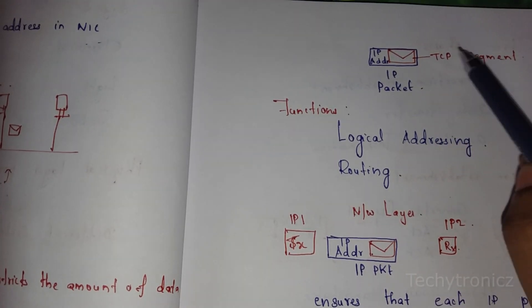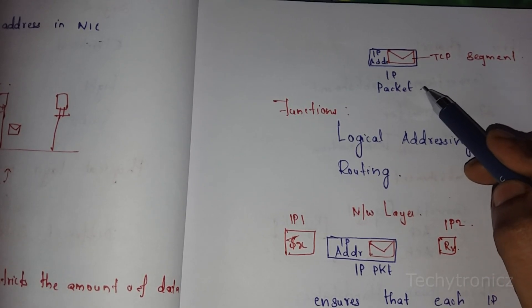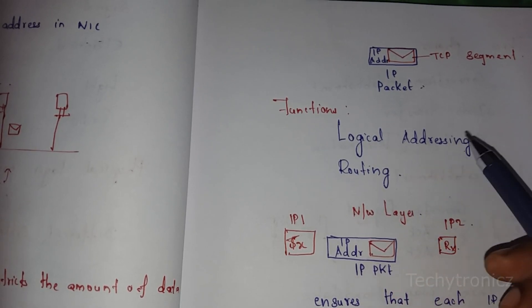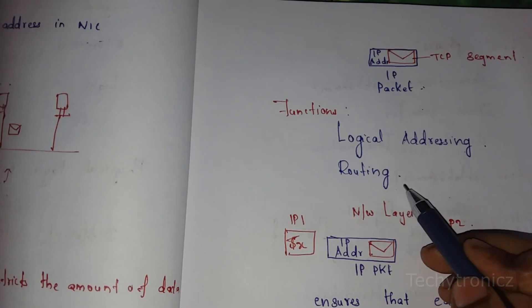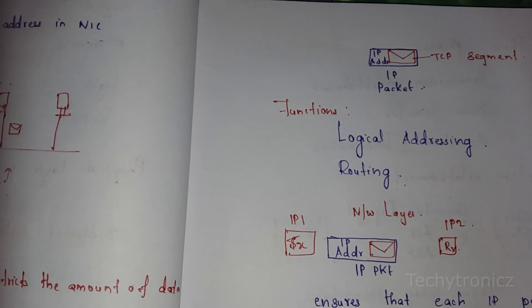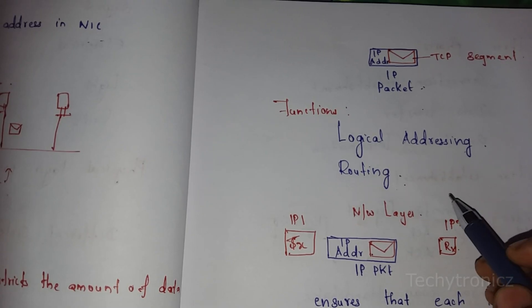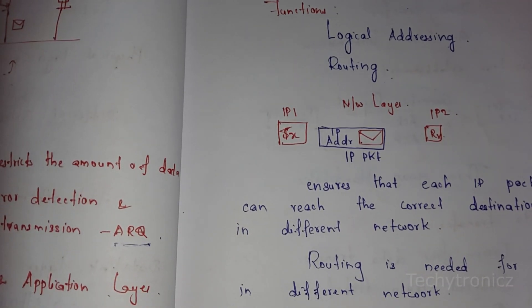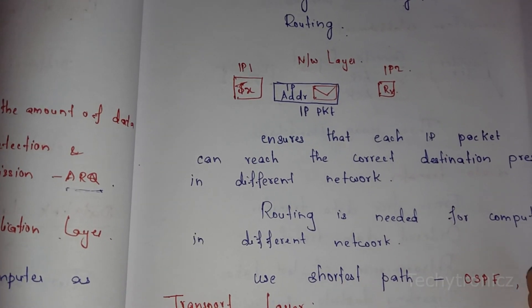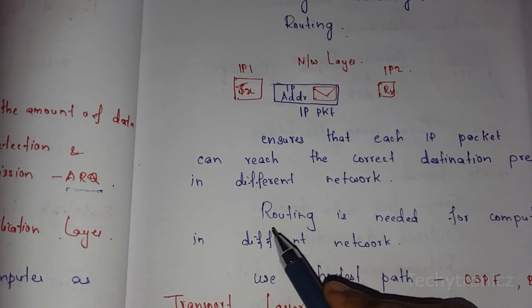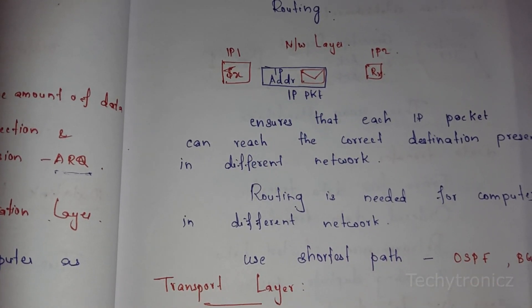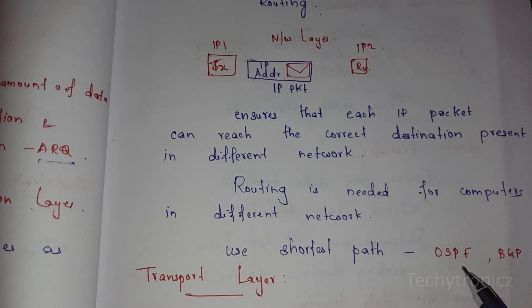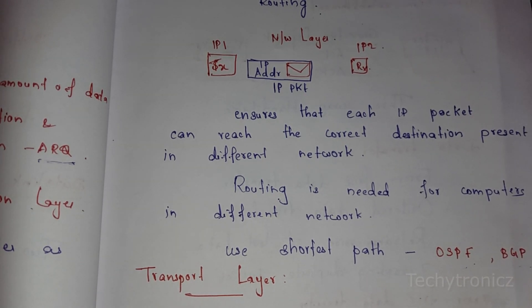The Network Layer's main functions are logical addressing and routing. Logical addressing adds the source IP address and destination IP address to the segment. Routing ensures each packet reaches the correct destination. Routing is needed when computers in different networks communicate. The router determines the path, finding the shortest path among various available paths - selecting the shortest and safest path to transmit. Different methods like Open Shortest Path First and Border Gateway Protocol are used to select the path.